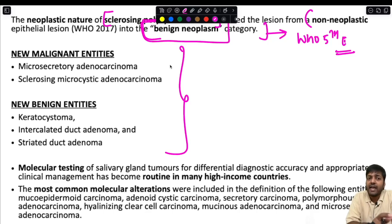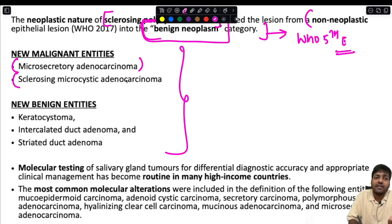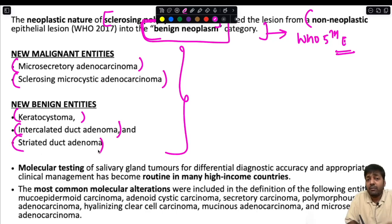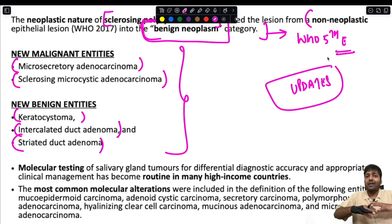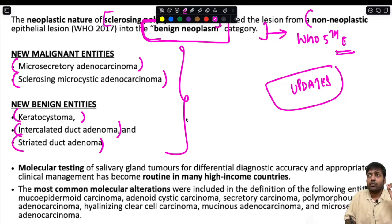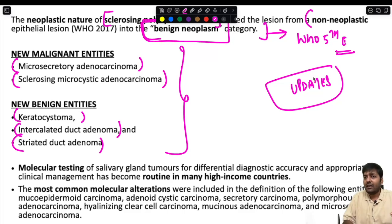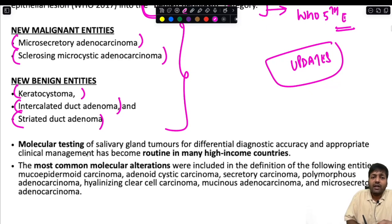New malignant entities include microsecretory adenocarcinoma and sclerosing microcystic adenocarcinoma. New benign entities include keratocystoma, intercalated duct adenoma, and striated duct adenoma. When answering a question about all the updates, write one or two lines about each of these new entities.